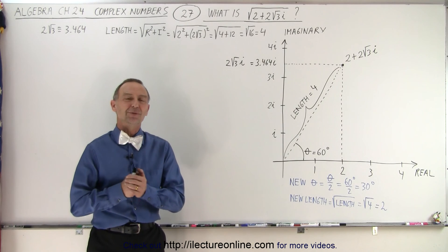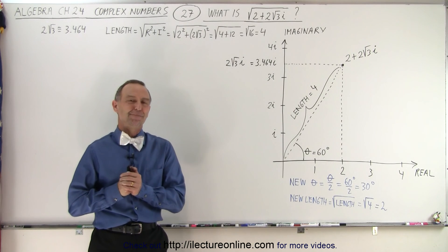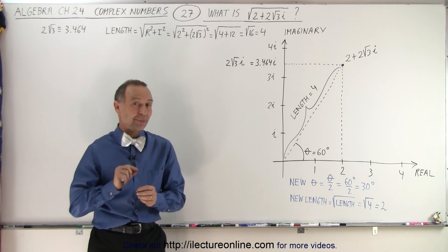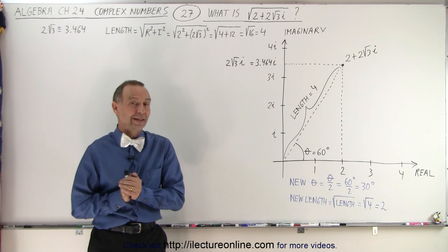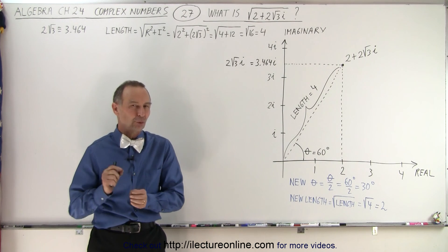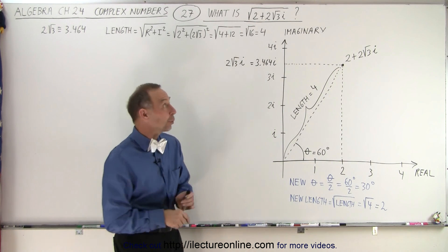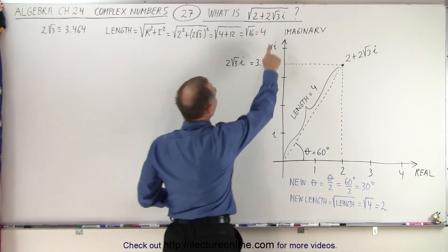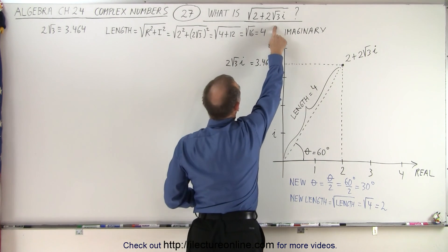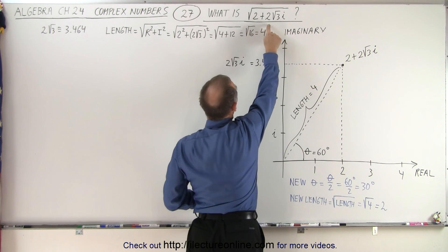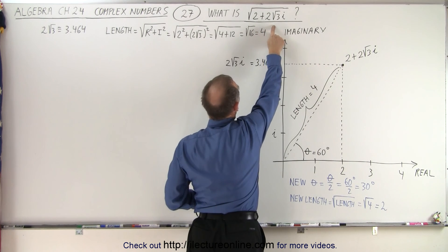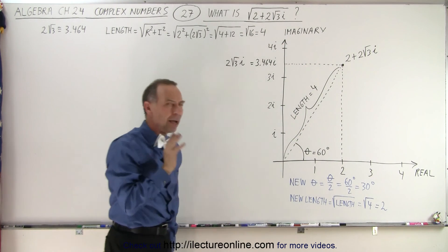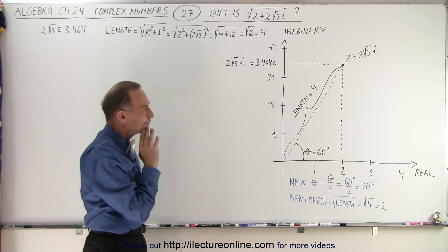Welcome to our lecture online. Now let's try something a little bit more challenging. Instead of taking the square root of i, we're going to take the square root of a complex number: 2 plus 2 times the square root of 3 times i. How do you do that?